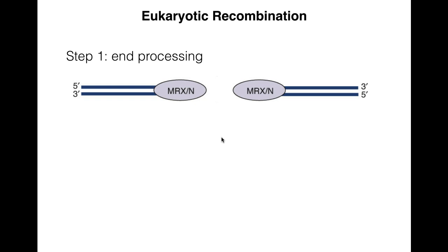X-rays cause double-strand breaks. This is a repair process that happens in mitotic cells. Irradiation or chemicals can cause double-strand breaks, as can topoisomerases and template strand nicks, since a template strand nick will lead to a double-strand break. These are processed just like in prokaryotes to make three-prime overhangs, beginning the end-processing step.